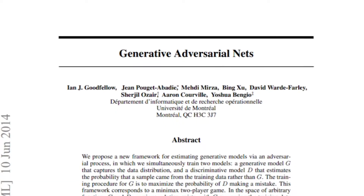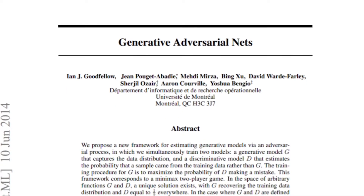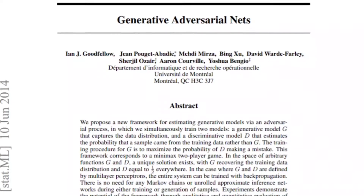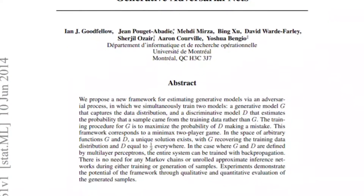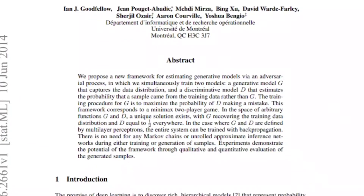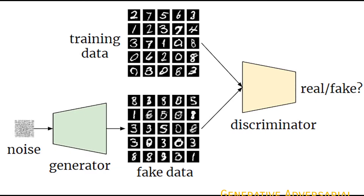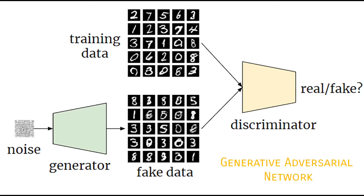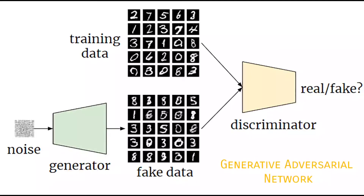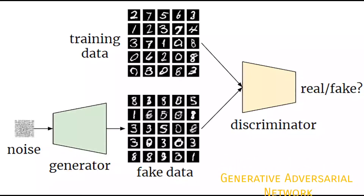GANs, also known as Generative Adversarial Networks, were introduced in a 2014 paper to solve the task of generative modeling, where the neural network attempts to learn an input distribution and then generate new samples which may not be exactly present in the original distribution. As indicated by the word adversarial, GANs are a pair of competing neural networks which train in step to defeat each other.